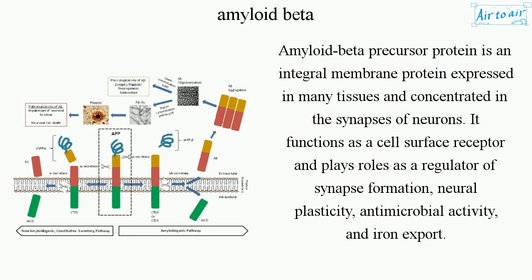The amyloid beta precursor protein is an integral membrane protein expressed in many tissues and concentrated in the synapses of neurons. It functions as a cell surface receptor and plays roles as a regulator of synapse formation, neural plasticity, antimicrobial activity, and iron export.